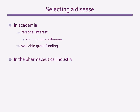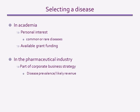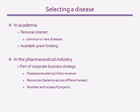In the pharmaceutical industry, choosing the disease target is part of corporate strategy and is not driven by the personal interests of the scientists. A major consideration will be the financial return on any drugs resulting from a project, so they are unlikely to choose a rare disease affecting a small number of patients. Other considerations include resources available — financial or existing research infrastructure — and the number and scope of existing projects. They are more likely to choose a disease area in which they have already invested and had some success, although they could, for strategic reasons, decide to enter a new disease area. They will also be mindful of competition from other drug companies.